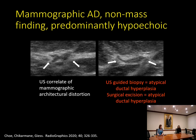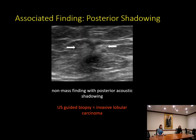It's really important to see non-mass findings on two orthogonal planes to confirm a real finding, because on one image it can look like surrounding tissue. Posterior acoustic shadowing as an associated finding can also help the radiologist pick up these sometimes subtle findings. In this example, the non-mass finding has shadowing that first catches the eye, but it's important to recognize the accompanying altered echotexture as well — a hyperechoic rim with a more hypoechoic area anteriorly. This was an invasive lobular cancer, a fairly common histopathology for malignant non-mass findings.